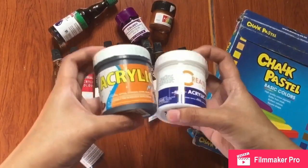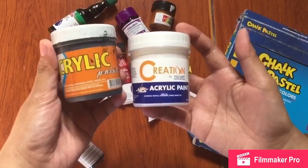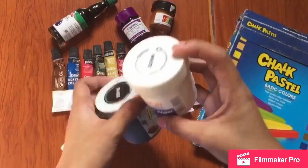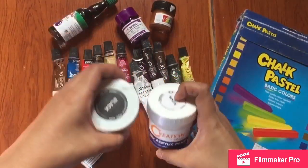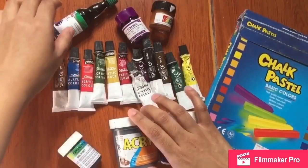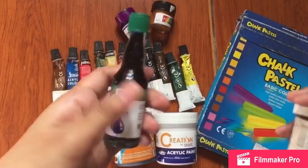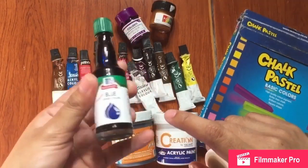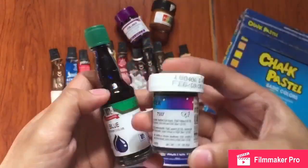There are also acrylic ones that you can buy at National Bookstore that come in tubes. Okay, it depends on the brand. So I use a lot of black and white, so I bought the ones in containers. And then another one that I use for coloring my clays are the food color.